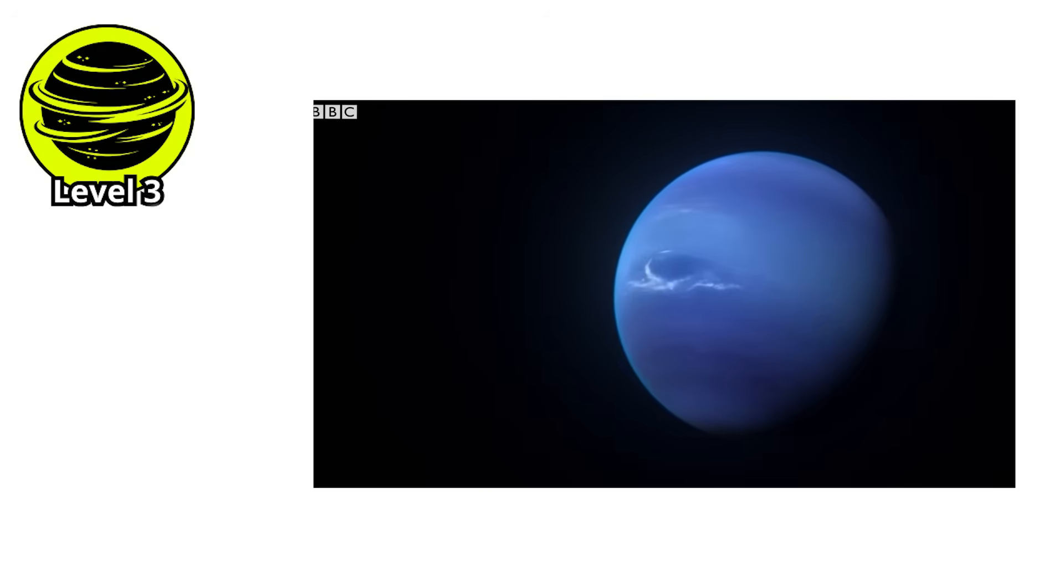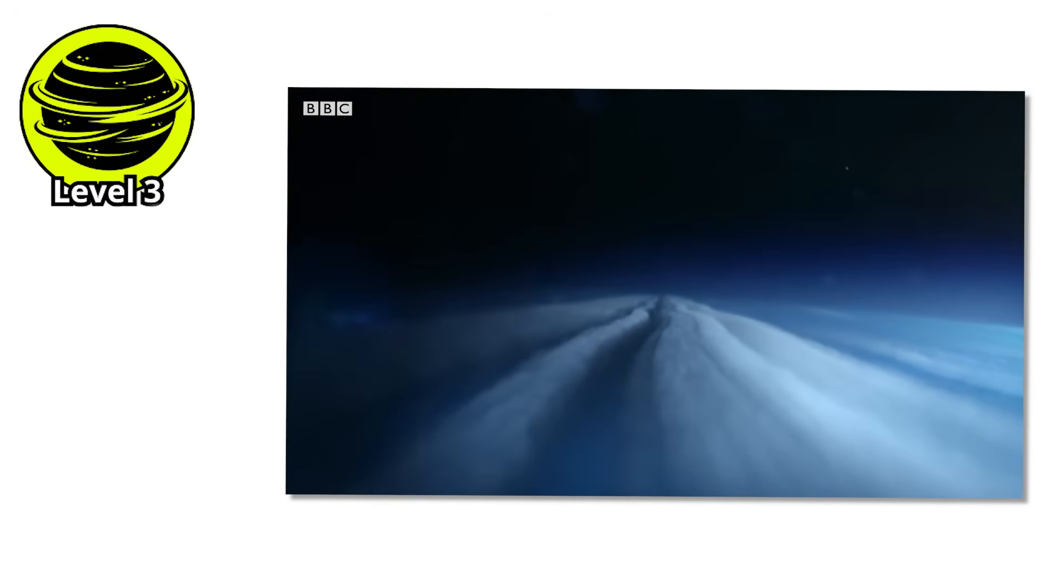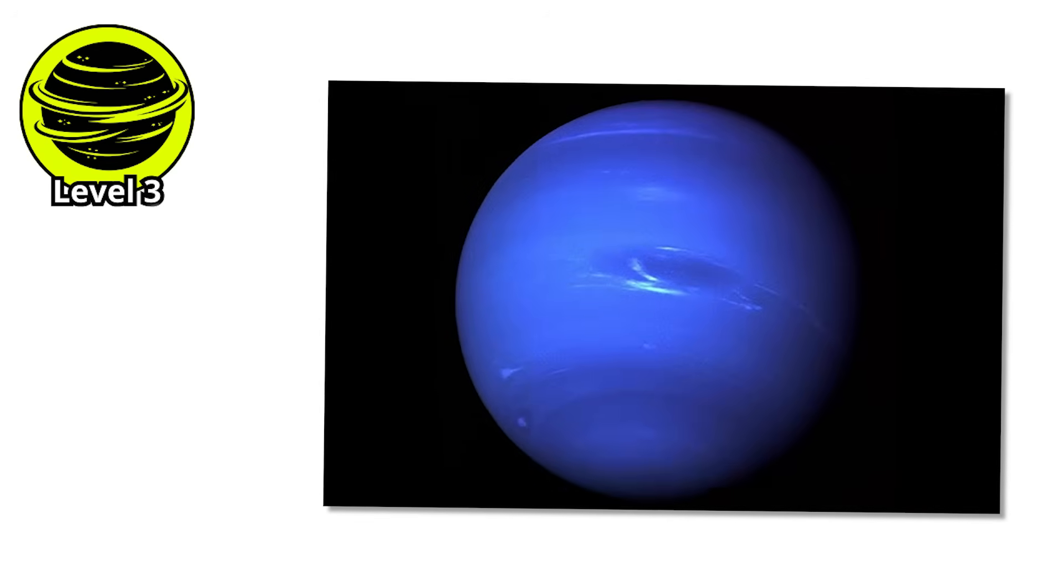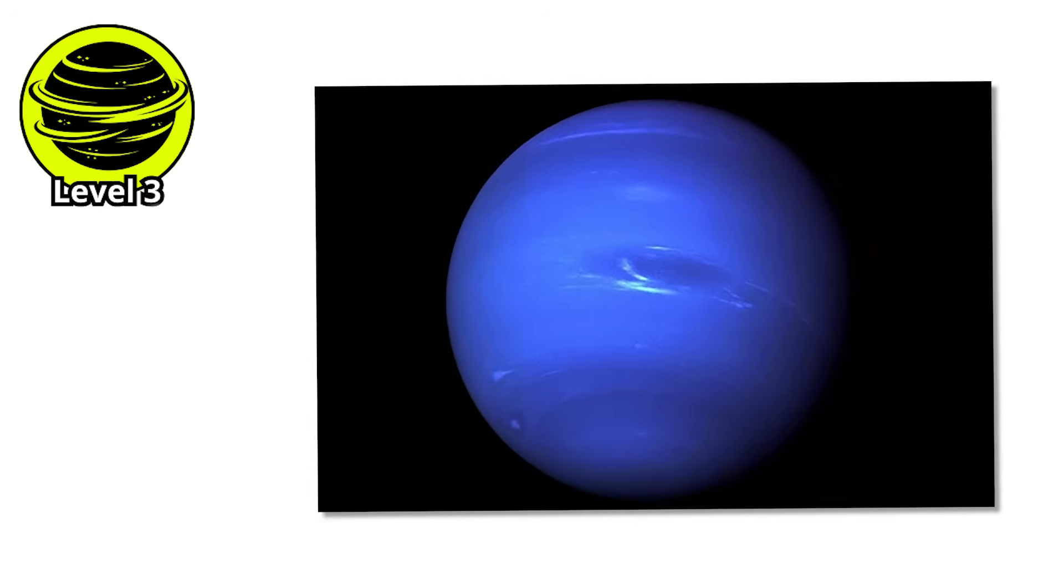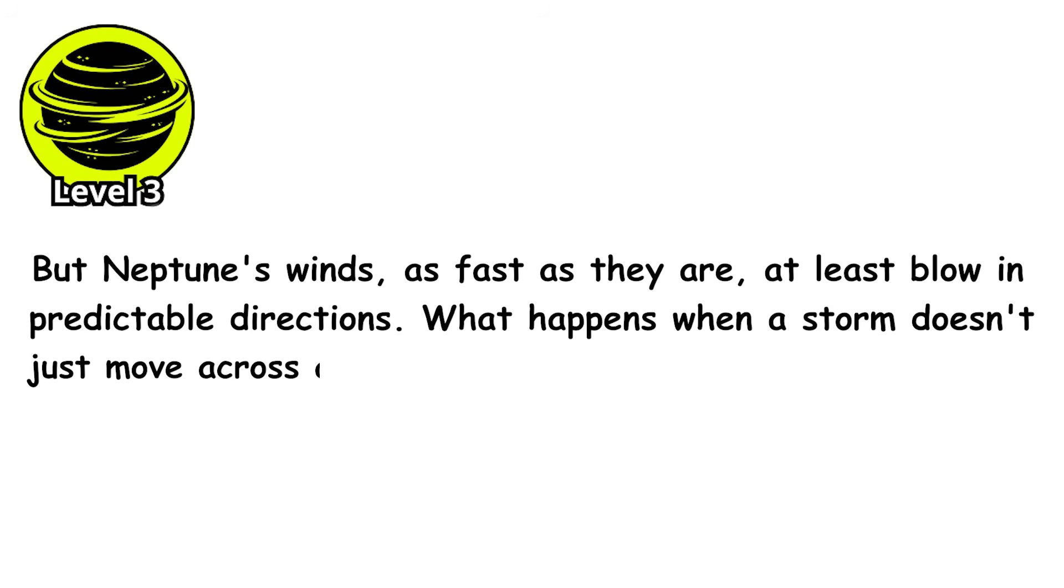Standing on a solid surface on Neptune, if such a thing existed, would be beyond lethal. The wind alone would scour flesh from bone in microseconds. The temperature, negative 353 degrees Fahrenheit, would freeze you solid before you had time to register the cold. But Neptune's winds, as fast as they are, at least blow in predictable directions. What happens when a storm doesn't just move across a planet, but encompasses the entire world?